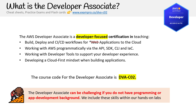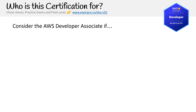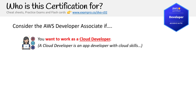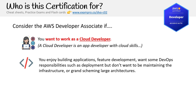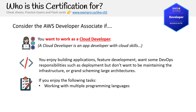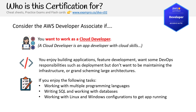The Developer Associate can be challenging if you don't have a programming or app development background, but don't worry — I include a lot of this in the course. That's why the labs are so long: we're spending time building foundational knowledge so you can really do the job for real. Consider the Developer Associate if you want to work as a cloud developer — essentially an app developer with cloud skills. If you enjoy building apps, feature development, some DevOps responsibilities like deployment, but don't want to maintain infrastructure or do large-scale architecture, this is the role for you. Tasks include working with multiple programming languages, writing SQL, working with databases, Linux and Windows configurations, and troubleshooting logs.